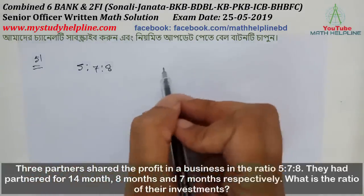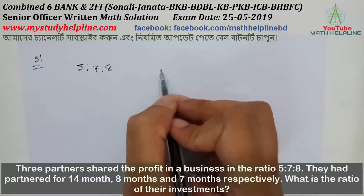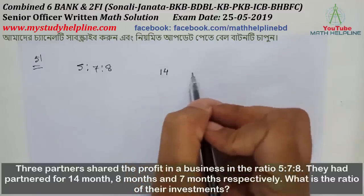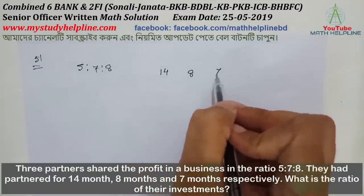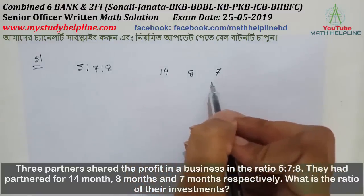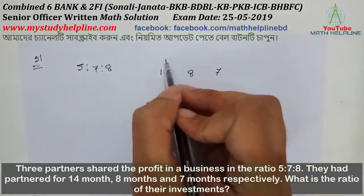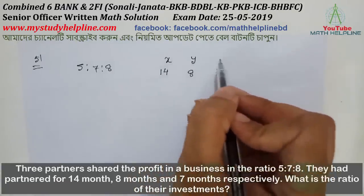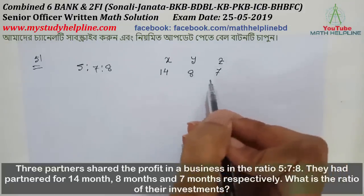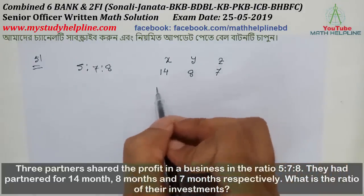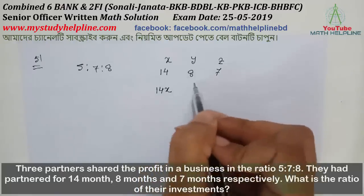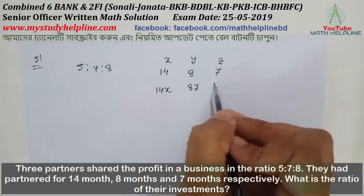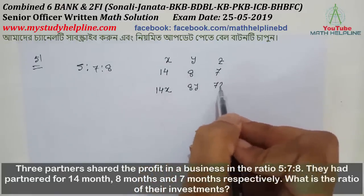The first partner's investment period is 14 months, the second partner's is 8 months, and the third partner's is 7 months. Let the investments be x, y, and z respectively. So total investment expressions are: first partner 14x, second partner 8y, third partner 7z.